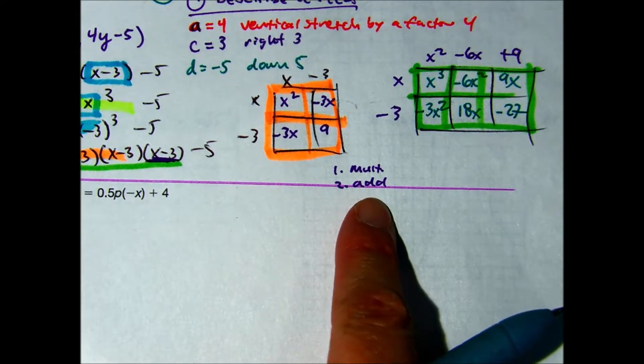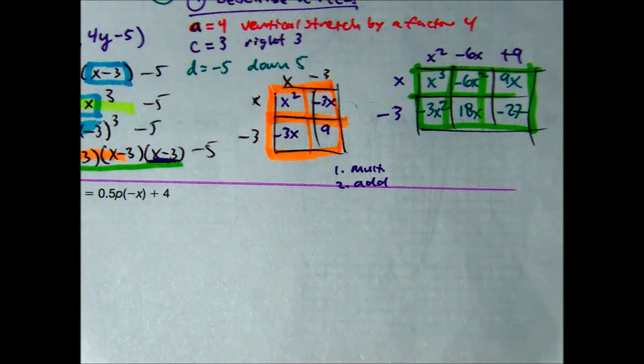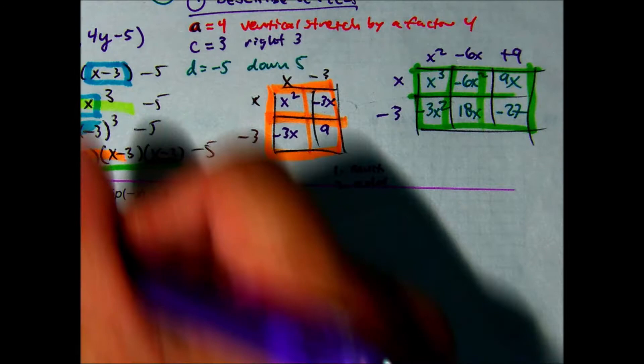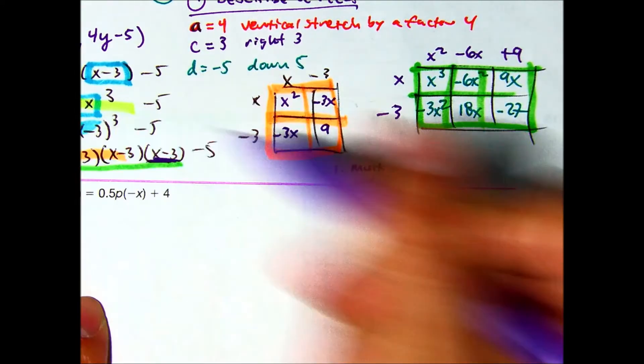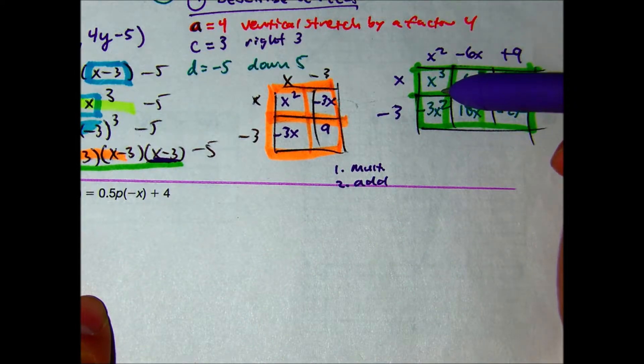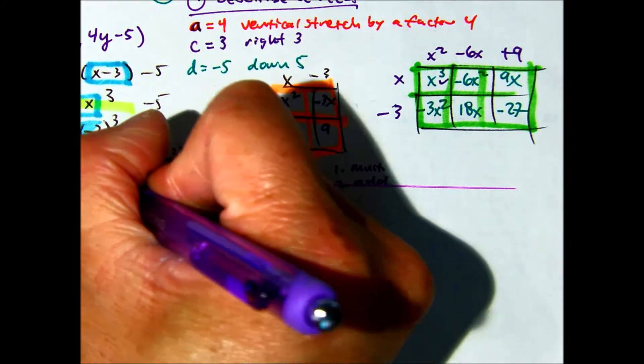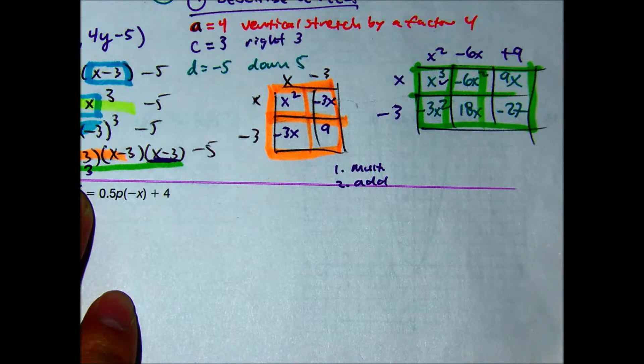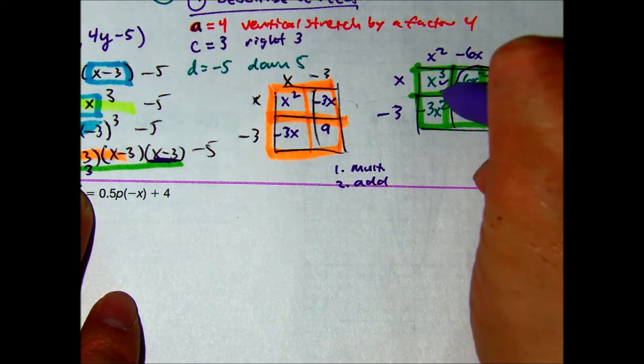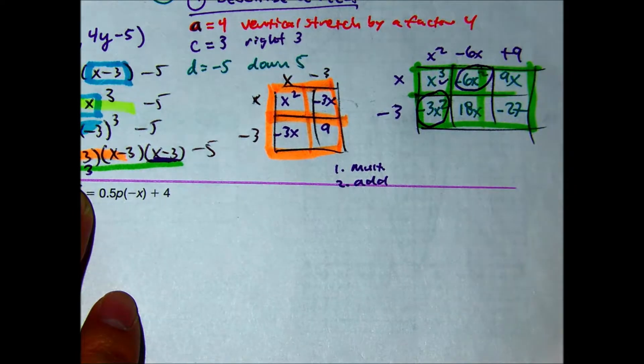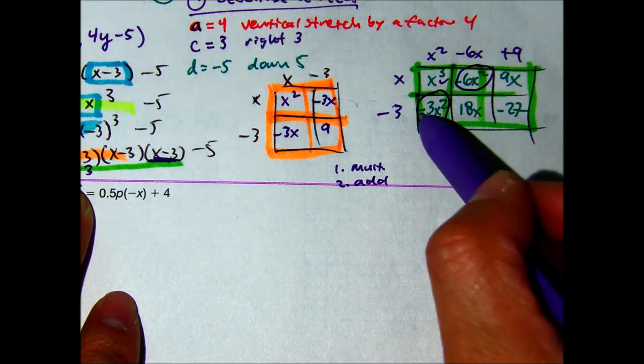Let's now add. Rudy? Can I combine anything with x cubed? Correct. What else? What do you get? What do you get? Negative 3 minus 6.